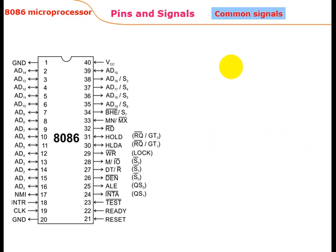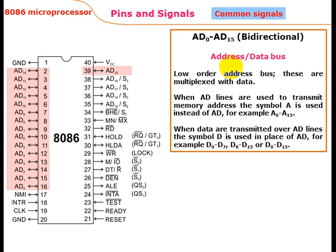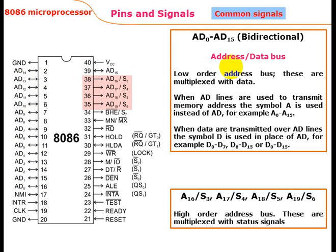The 8086 microprocessor pin diagram: pins AD0 to AD15 are bidirectional address/data bus for the low-order address. These lines are multiplexed with data. When the AD lines are used to transmit memory addresses, the symbol 'A' is used, for example A0 to A15. When data is transmitted on the AD lines, the symbol 'D' is used, for example D0 to D15.